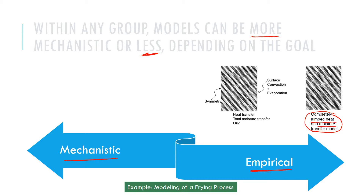We can improve on this to have a simple diffusion model, where moisture diffuses and moisture loss from the surface is treated as a boundary condition obtained from experiment. Remember that evaporation of water happens throughout, so treating moisture loss only as a boundary condition is a big assumption. Still, this model has a little more mechanistic component than the previous lumped one.